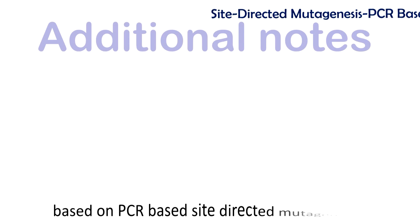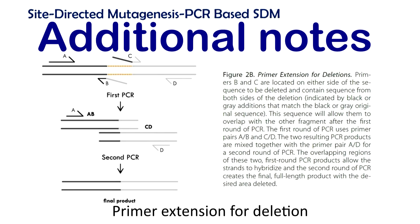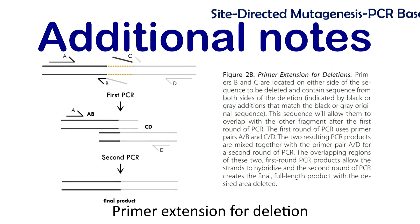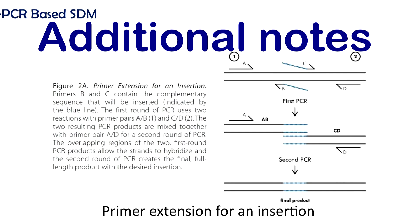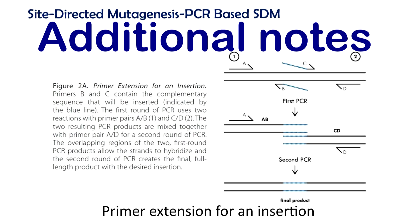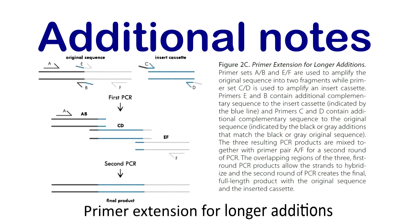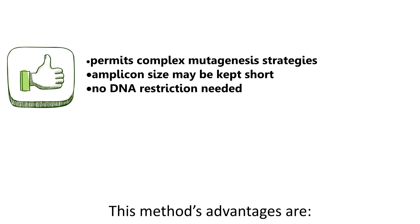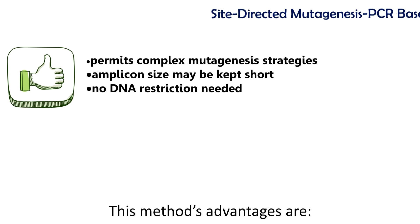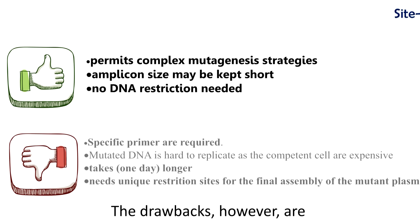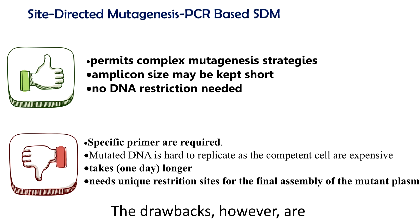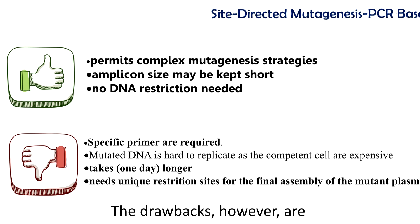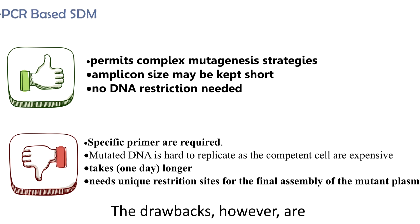There are several additional notes based on PCR-based site-directed mutagenesis, covering primer extension for deletion, primer extension for an insertion, and primer extension for longer additions. This method's advantages are: it permits complex mutagenesis strategies, amplicon size may be kept short, and no DNA restriction is needed. The drawbacks are: specific primers are required, mutated DNA is hard to replicate as competent cells are expensive, it takes one day, and it needs unique restriction sites for the final assembly of the mutant plasmid.